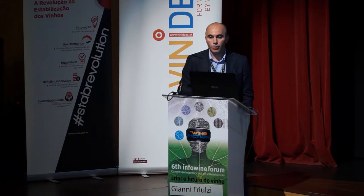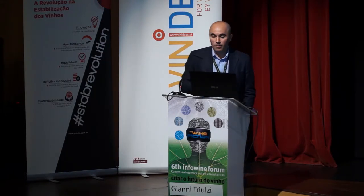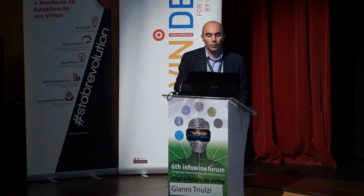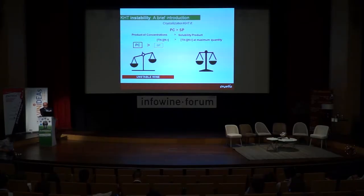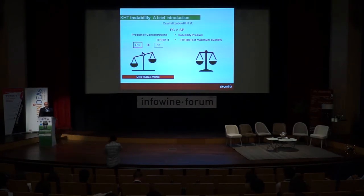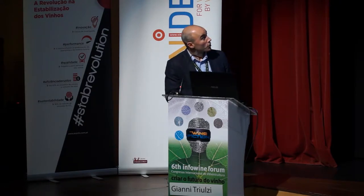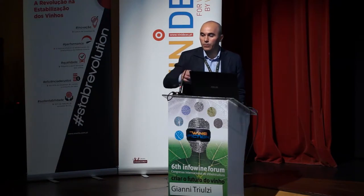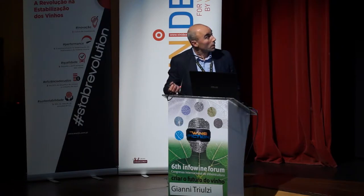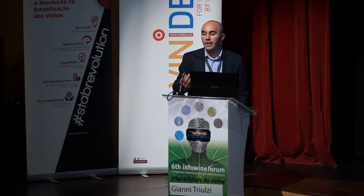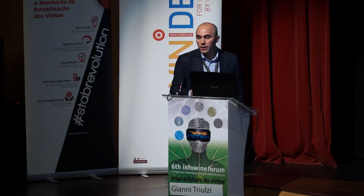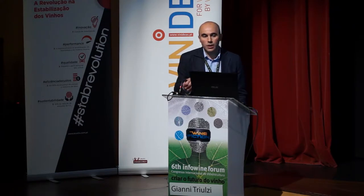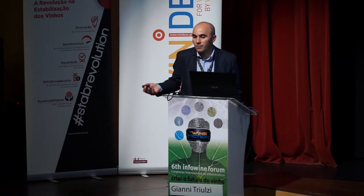Why are wines tartarically unstable? In a very simple way, it's common to say that wines are tartarically unstable because the product of the concentration is higher than the solubility product — of two ions: the tartrate ion and potassium. How is it possible that the product of the concentrations is higher than the solubility product, the maximum amount of these compounds that can stay in solution? It's simple. This is possible because when we start fermenting juices — when we start producing ethanol — we lower the solubility product of potassium bitartrate. Potassium bitartrate is a salt that is totally insoluble in ethanol. So it's like saying: when we start fermenting, we start building tartaric instability.